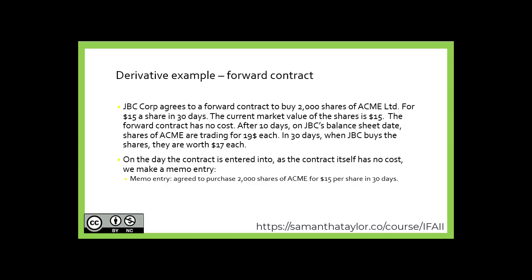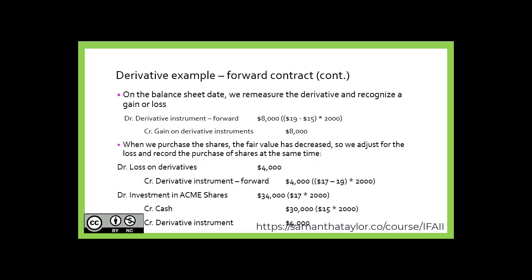On the day the contract is entered into, as the contract itself has no costs, we make a memo entry: we agree to purchase 2,000 shares of Acme for $15 per share in 30 days. On the balance sheet date, we remeasure the derivative and recognize a gain or loss. There is a gain because the value was $15 at purchase and is now $19 — a difference of $4 times 2,000 shares, which is a gain of $8,000. It's a gain, so the forward financial instrument goes up: a debit on our balance sheet and the gain goes through profit and loss as a credit.